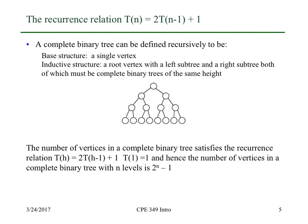Let's see if we can find out something about complete binary trees. You can define a complete binary tree recursively. This is sometimes called structural recursion. We'll have a base structure that's a single vertex. The inductive structuring situation is a root vertex with a left subtree and a right subtree, both of which must be complete binary trees and of the same height. In this case, here's our root. We have this complete binary tree of height 2, this complete binary tree of height 2. We attach them to the root, and we get another complete binary tree.